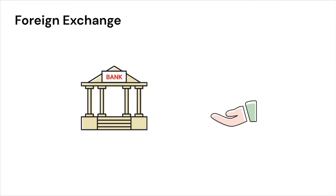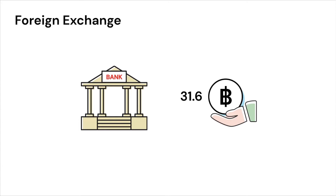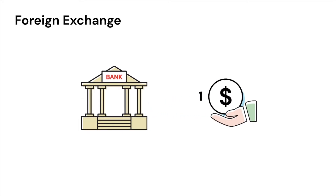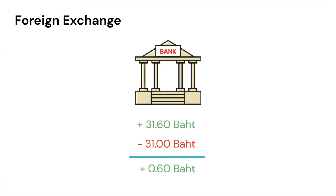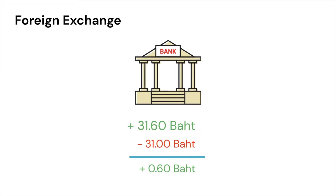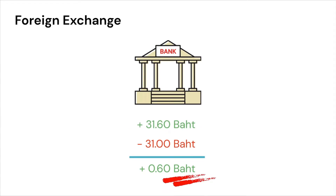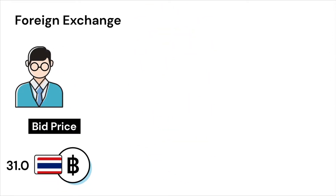On the other hand, let us say another customer of the bank wants to sell his Thai Baht and buy one US dollar. The bank will pay him the one US dollar that it received from the earlier transaction, but charge him 31.6 Thai Baht. In summary, the bank paid 31 Thai Baht and collected 31.6 Thai Baht, making a cool profit of 0.6 Thai Baht in the process.